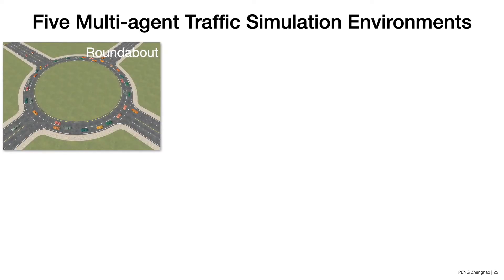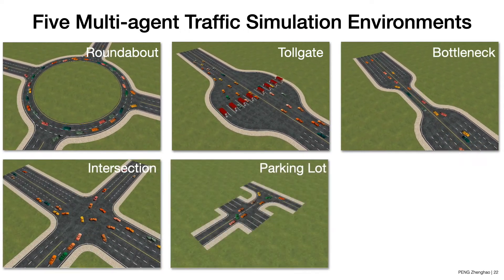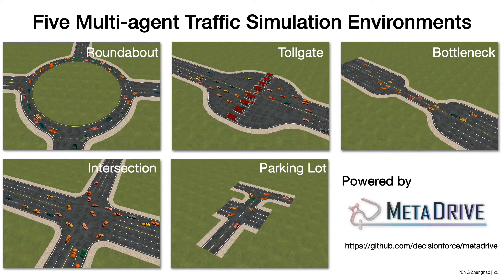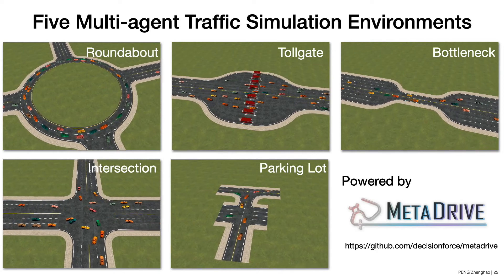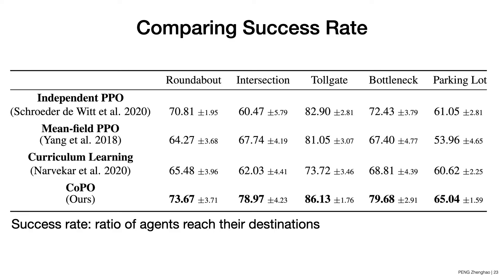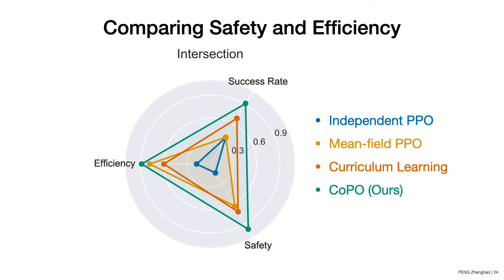To evaluate different methods, we propose five multi-agent traffic simulation environments: roundabout, tailgate, bottleneck, intersection, and parking lot, all powered by MetaDrive, a lightweight and efficient driving simulator. We compare success rate — the ratio of agents achieving their destinations — across baselines including independent PPO, centralized MAPPO (mean-field PPO), and curriculum learning, against CoPO. CoPO outperforms all baselines in all environments by a large margin. We also compute efficiency (total successes in a given time interval) and safety (total crashes; lower is better), finding that CoPO achieves the best results in the intersection environment.